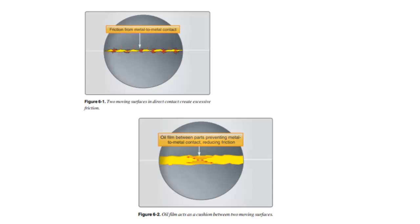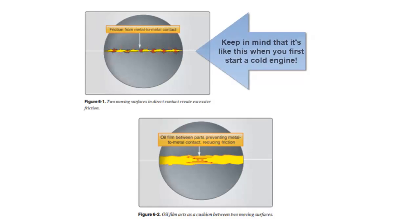So while the engine is running, things are spinning and moving back and forth, but they're never actually touching one another when they do that. Theoretically, that's the way it works. Once the engine is up and running and oil pressure is established, the parts really shouldn't touch each other.